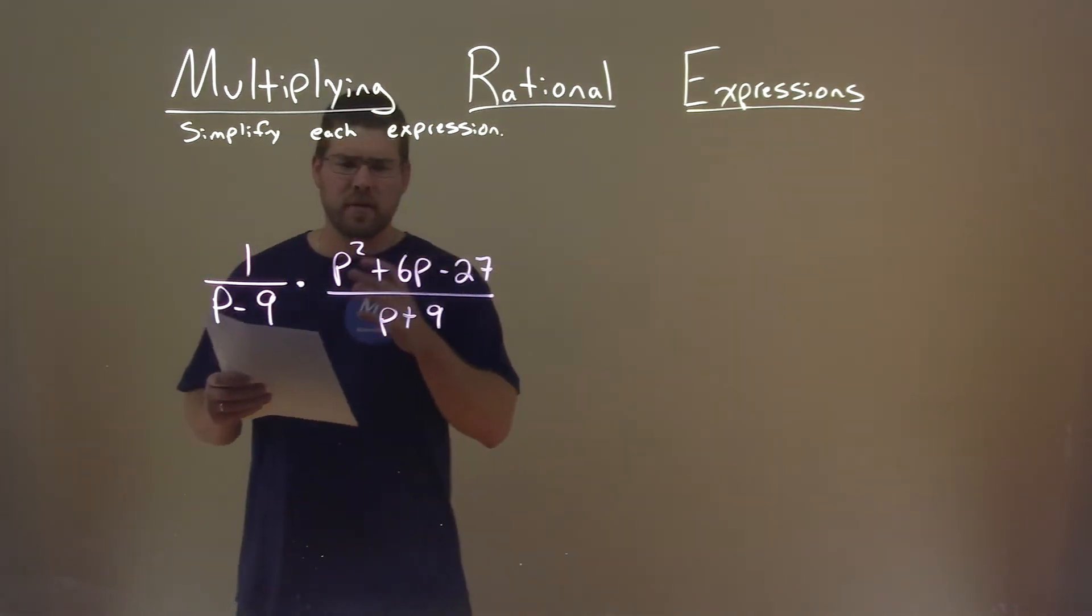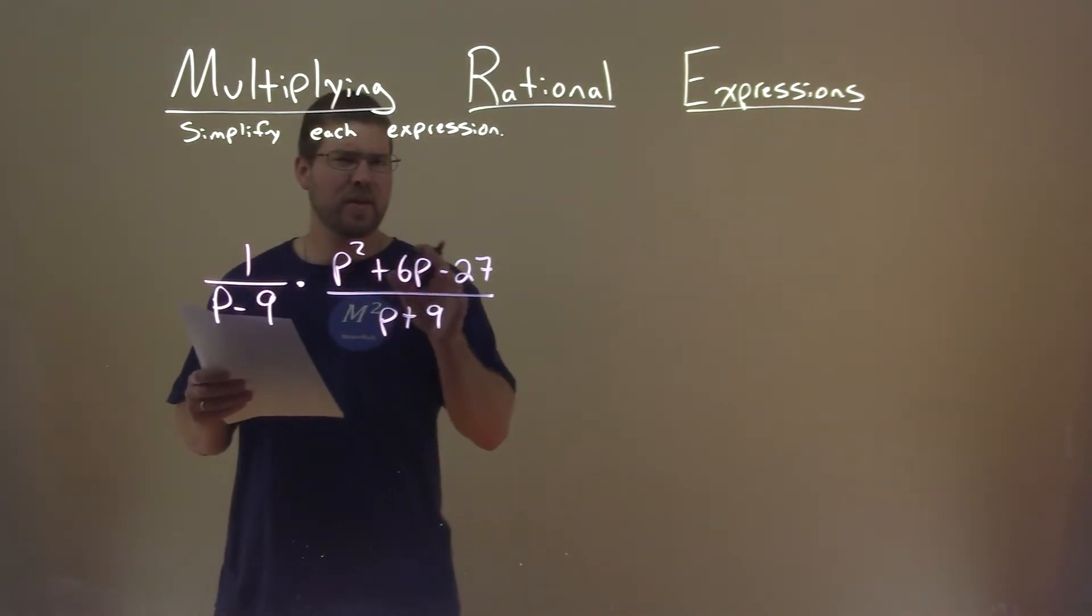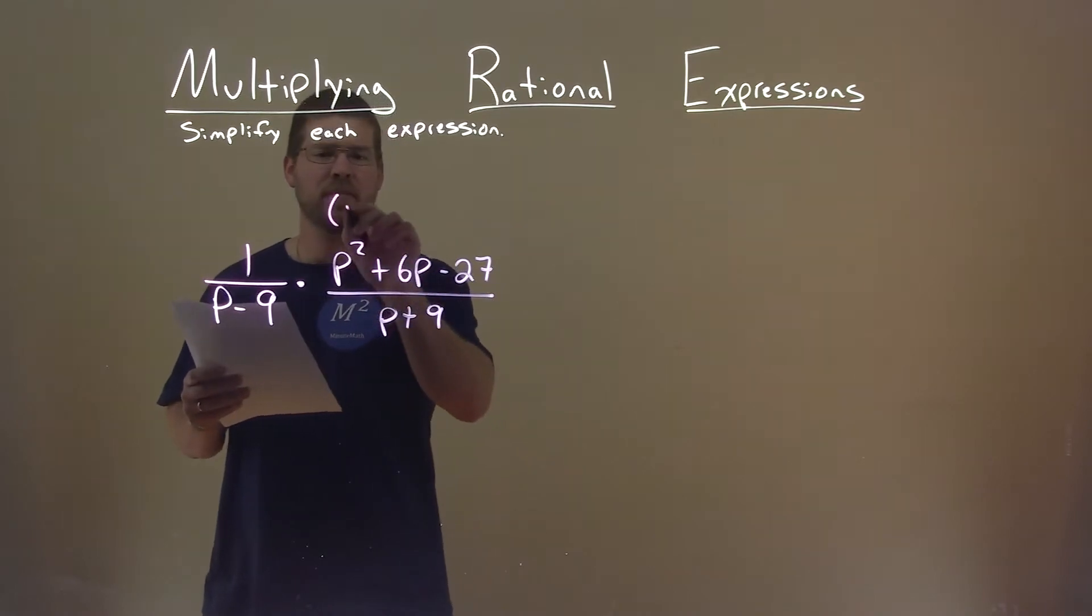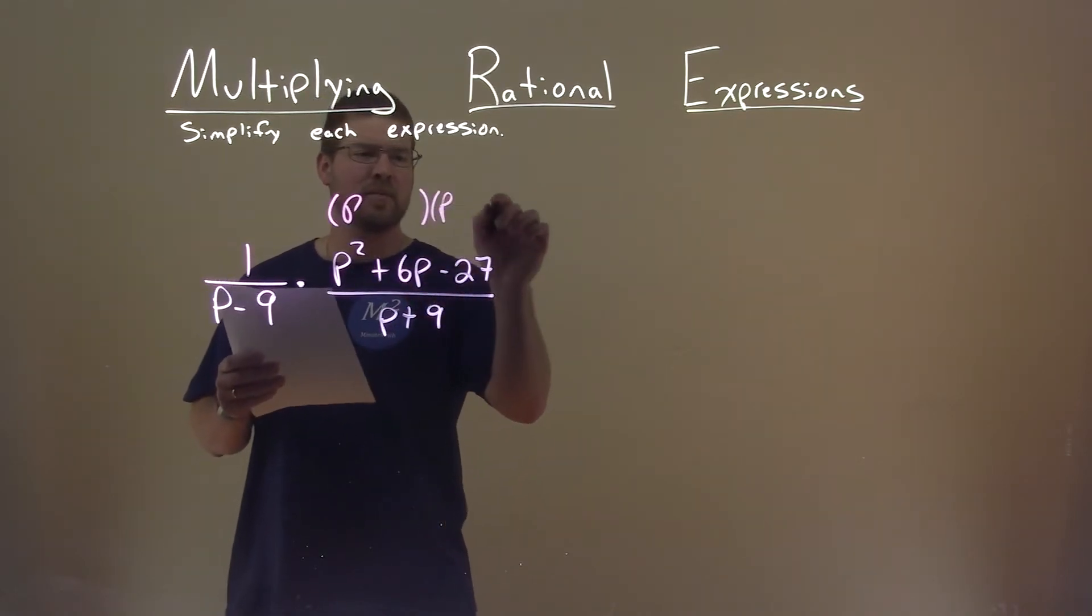Well, I first have to look at this and say, okay, anything else I can really break down or factor? And right here, p squared plus 6p minus 27 looks like it can factor pretty easily.